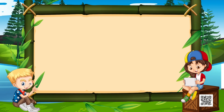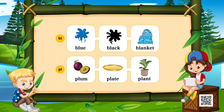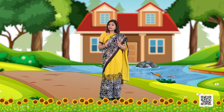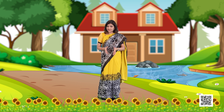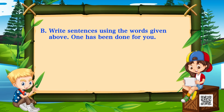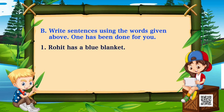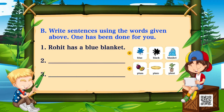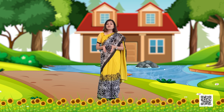You love colorful pictures, right? Here are some beautiful colorful pictures for you — identify and read the words given below them. Now that you've identified the pictures and read the words, write sentences using those words. For example: 'Rohit has a blue blanket.' Likewise, write two other sentences. Recall the story and enjoy these fun activities with your family and friends, and share your experiences with your teachers.